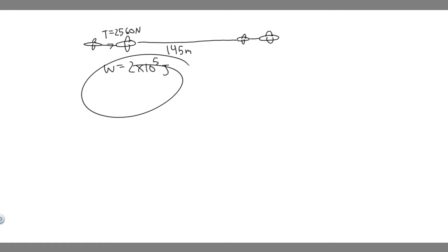As usual, you want to draw what's going on. We have this plane towing this glider, and we know the tension in this rope is 2,560 newtons. It's going to pull at a distance of 145 meters, and we know the work that this is going to take is 2 times 10 to the 5 joules. What we're trying to solve for is the angle between this rope and the horizontal.